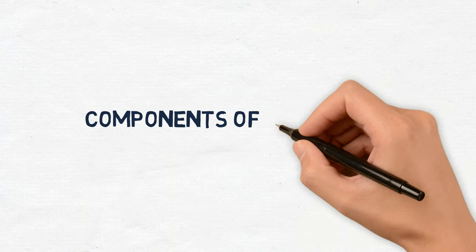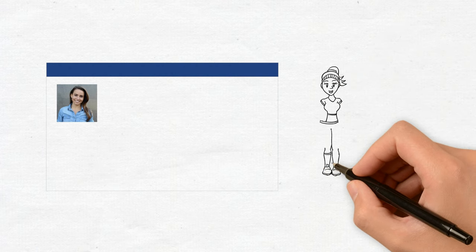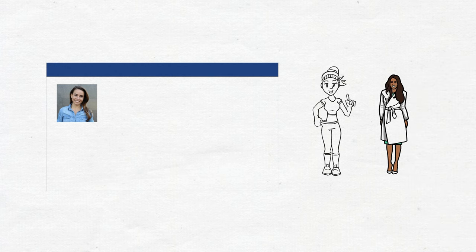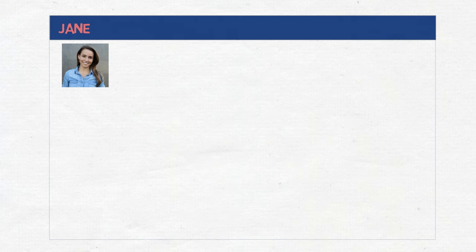Let's jump into the components of a persona. First, you want to select an image. When selecting the image, keep in mind it should be a real person, someone that represents your target customer. Don't use a celebrity or cartoon. Instead, you want to use someone that represents the age, gender, and personality of your persona. Next, give your persona a name. You should give them a name because they are a representation of your primary user, so you should refer to them as a real person. A person has thoughts, feelings, and behaviors that you can empathize with while making design and feature decisions. Naming your persona is key — it adds a human element and creates a storyline narrative to aid problem solving.